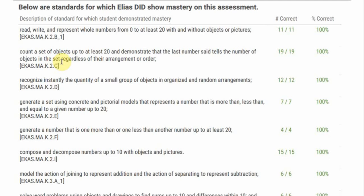So it could have been a scatter, it could have been a circle, it could have been an array, could have been a row, a column. The next one, recognize instantly the quantity of a small group of objects in organized and random arrangements. 12 out of 12, that's a hundred percent.